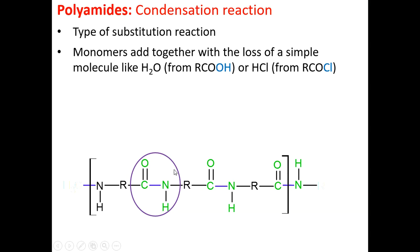And so this is what we call the peptide link. We make this peptide link by joining an acyl chloride with an amine or a carboxylic acid with an amine.